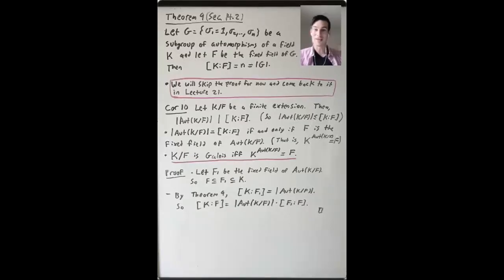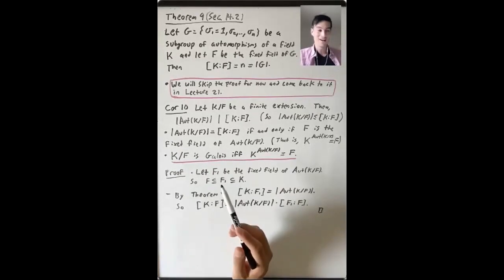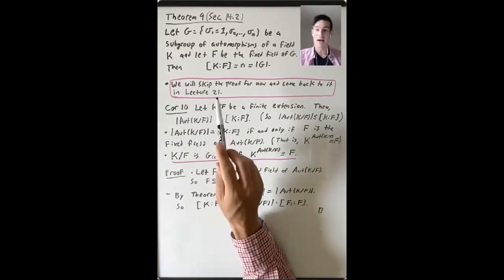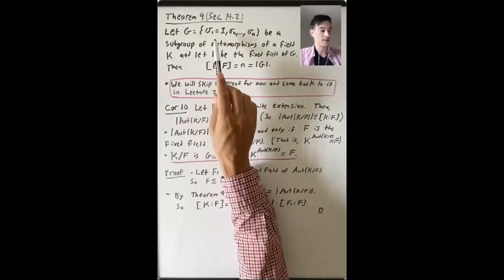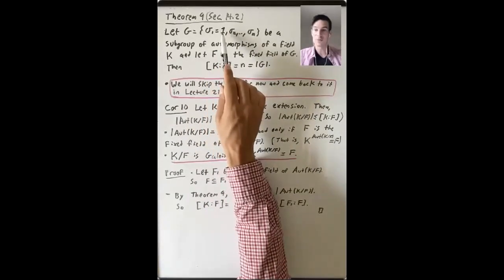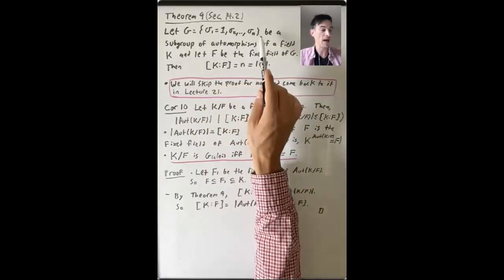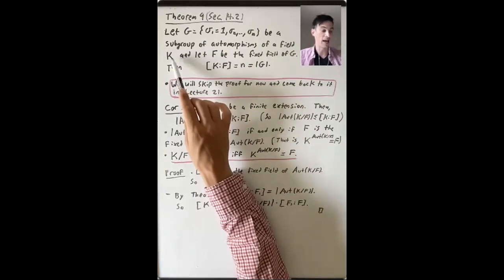In this lecture, we'll continue our study of Galois extensions following section 14.2 of Dummit and Foote. We're going to do something a little unusual. I want to start with the statement of Theorem 9. So this says: let G consist of sigma one, which will be the identity automorphism, and then sigma two up through sigma n, and that will be a subgroup of automorphisms of a field K.